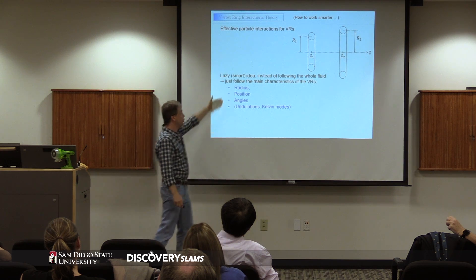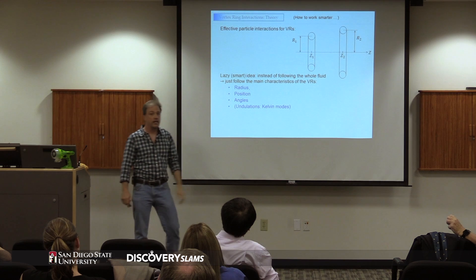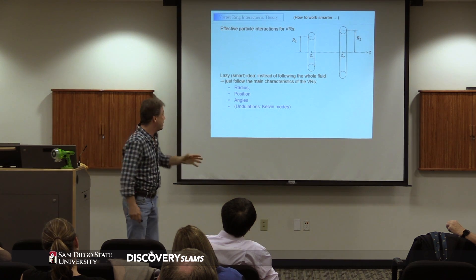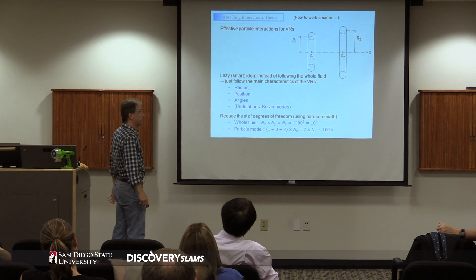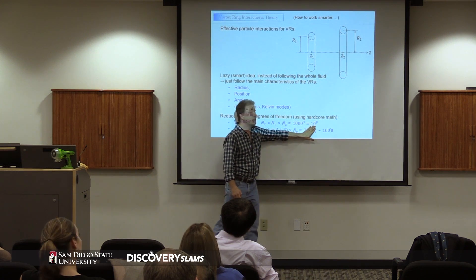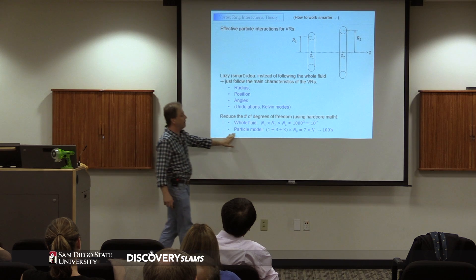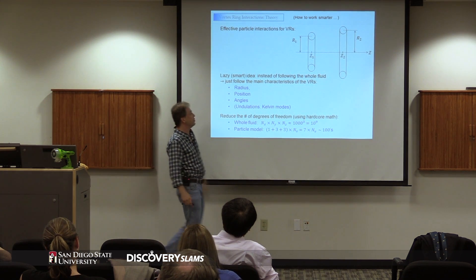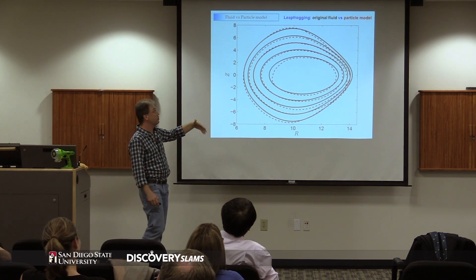In other words, just track where they are: what are their radii, what are the angles, and try to get the equations of motion for these very peculiar characteristics of the vortex rings. So instead of a whole fluid with hundreds of thousands of millions of points, you are just talking about a very few degrees of freedom — their positions and their angles.